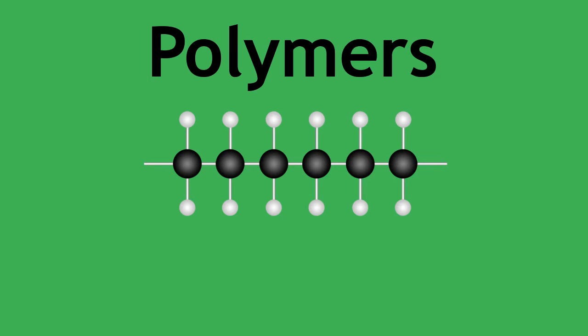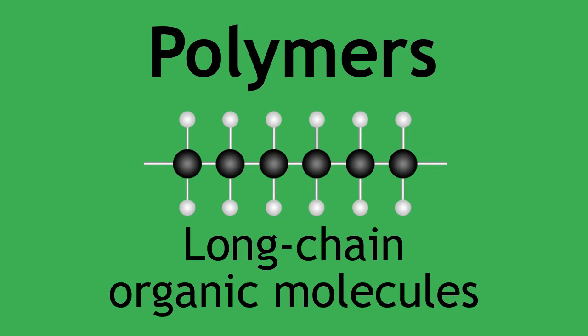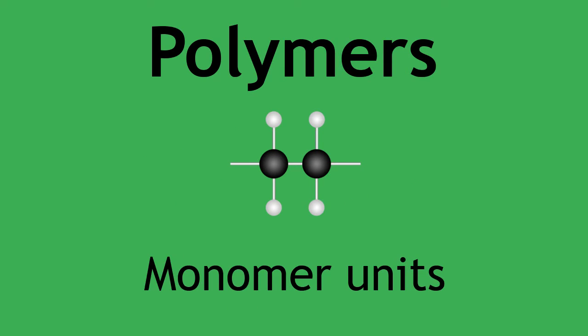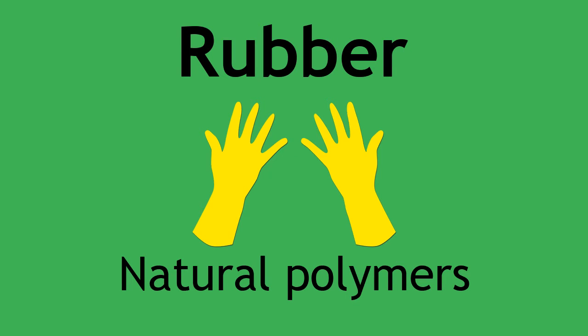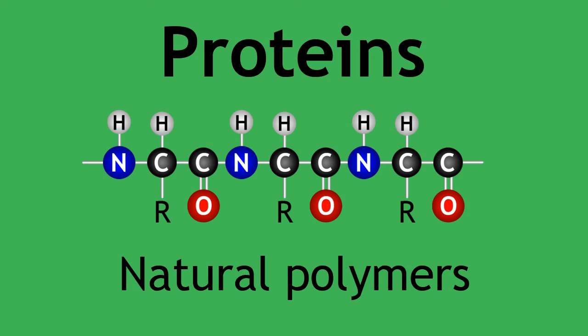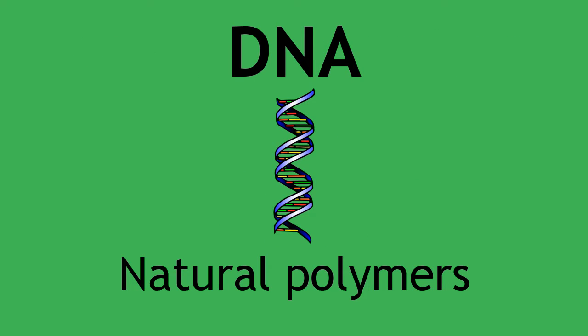As you now know, polymers are long-chain organic molecules made by repeating monomer units. There are a number of natural polymers in life, such as rubber, and even in our own body we have natural polymers such as proteins, carbohydrates and DNA to name just a few. We will focus the rest of this tutorial on synthetic polymers.